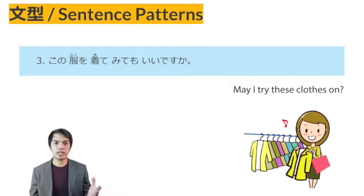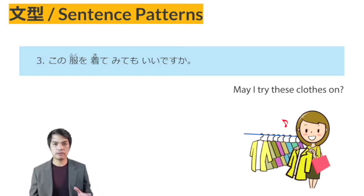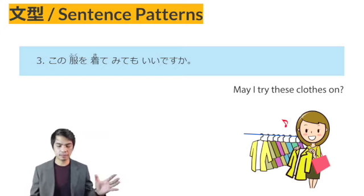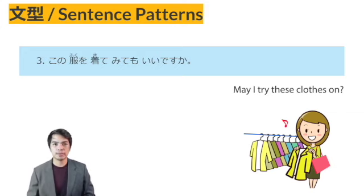So if you want to try to do something, you can use the Verb TE MIMASU pattern. Now let's look at more example sentences about these sentence patterns.